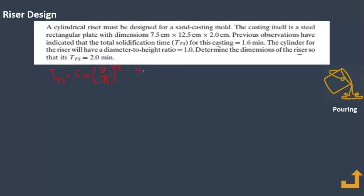In Chauvinov's rule, V is the volume of the cast product or mold cavity, and A is the surface area of the mold cavity.